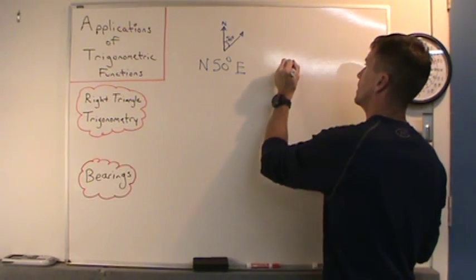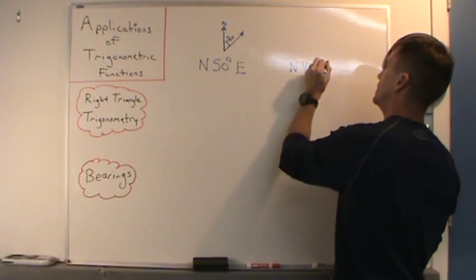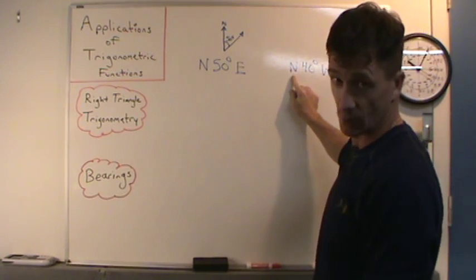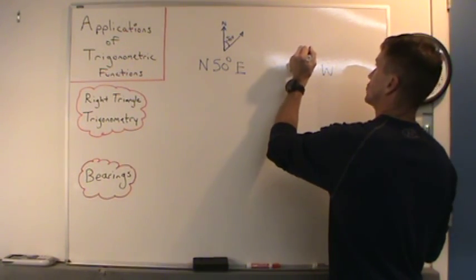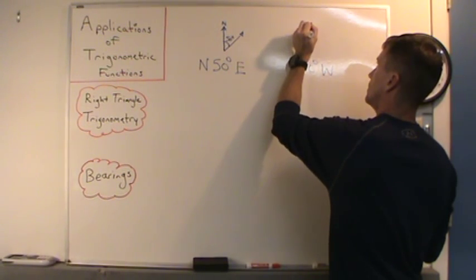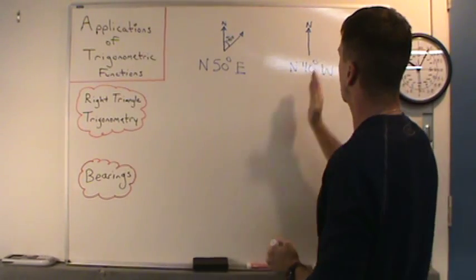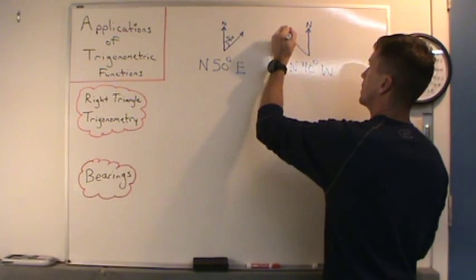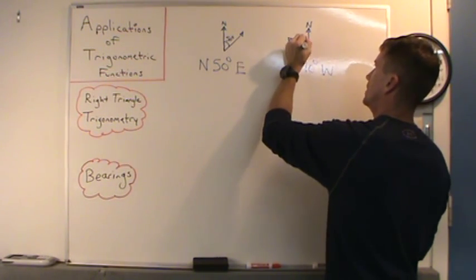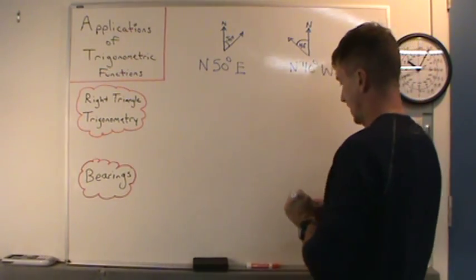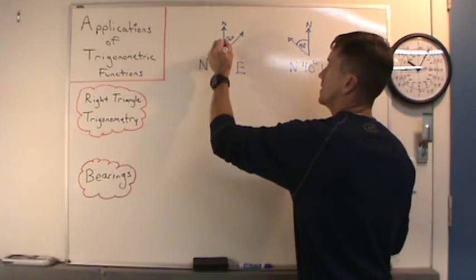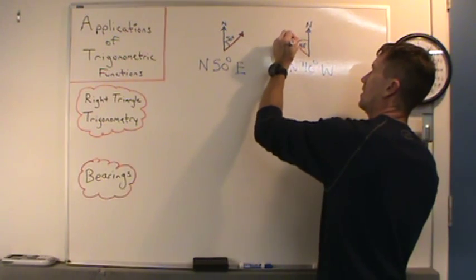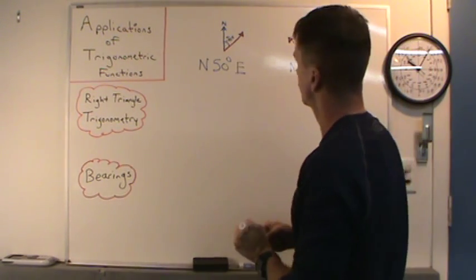Here's another one: N 40 degrees W. We read this as 40 degrees west of due north. So I start by drawing due north and go 40 degrees to the west of due north — 40 degrees right in there. This indicates a direction. These are angles that indicate directions.